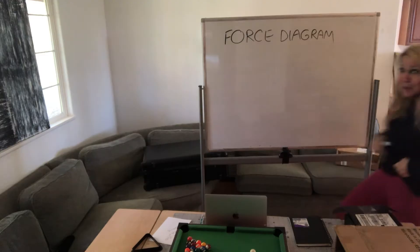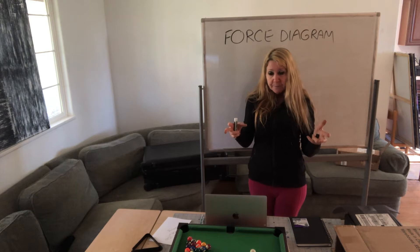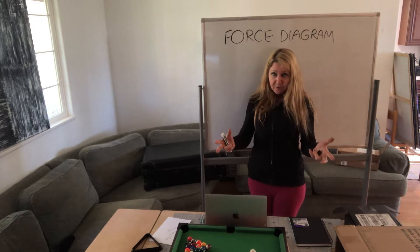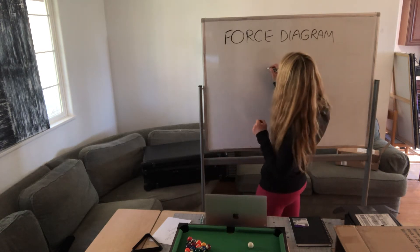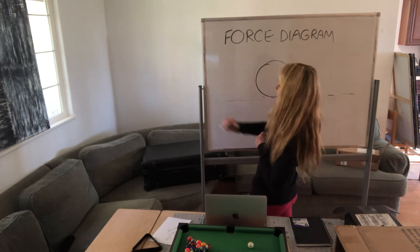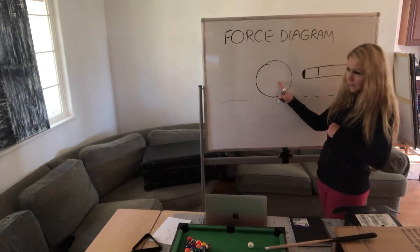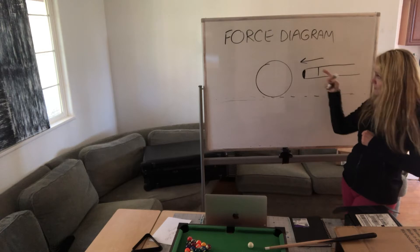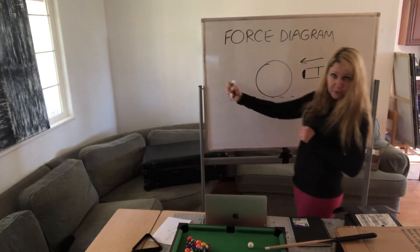We can visualize these forces using what's called a force diagram. A force diagram shows the size — the magnitude — and the direction of the force. I'm going to draw the cue ball on the felt table. The cue stick applies a force called thrust, going in this direction.